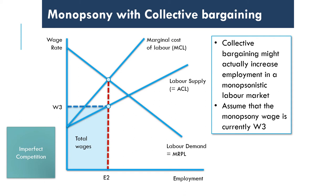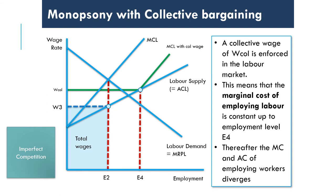Suppose the union, through collective bargaining, enforces a collective wage of W_coal. This means the firm cannot employ workers at a wage below W_coal, so W_coal effectively becomes the marginal cost of labour up until the point where it meets the labour supply curve, at which point MCL starts to rise with the wage rate. Up to this point we almost have a perfectly competitive labour market where marginal cost equals average cost of labour, effectively removing some of the monopsony power from the monopsonist.